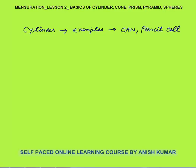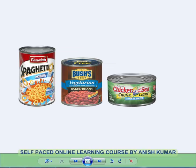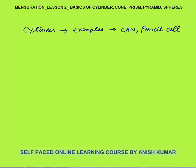Hello, this is mensuration lesson two. In this I will discuss basics of cylinder, cone, prism, pyramid, and spheres. First of all, what is the cylinder? Examples of cylinder are everywhere in our real life — for example, cold drink cans, pencil cells. All are examples of cylinder. Cylindrical shaped products are everywhere in our real life.